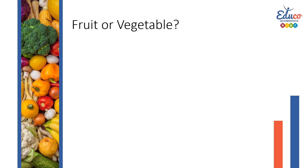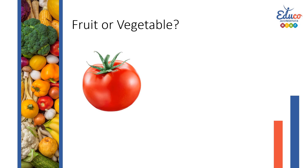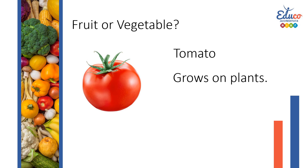Fruit or vegetable? What is this? Tomato. Can everyone repeat: tomato. Is a tomato a fruit or a vegetable? A tomato grows on plants. A tomato has seeds. Is a tomato a fruit or a vegetable? Fruit. A tomato is a fruit.